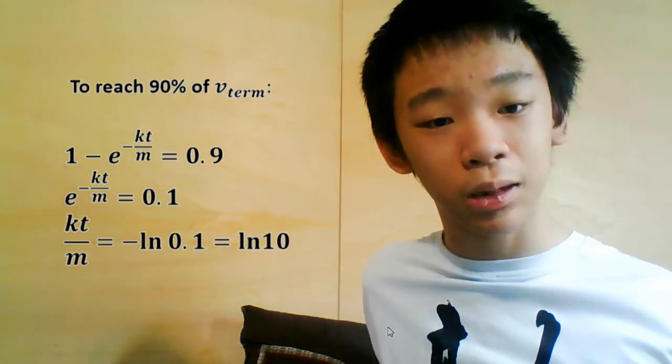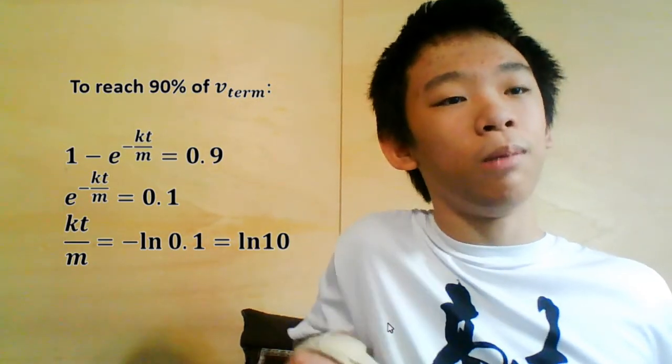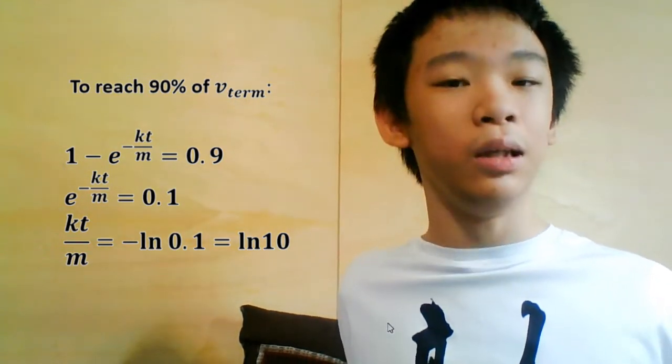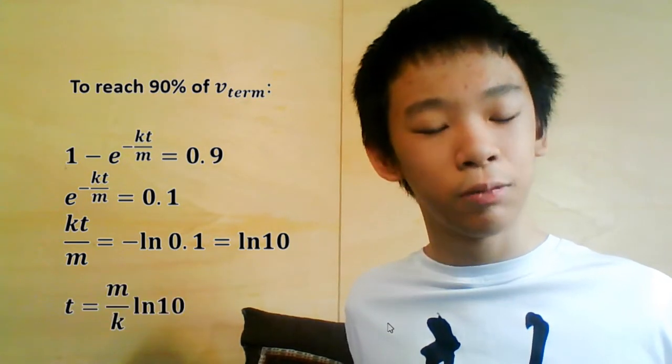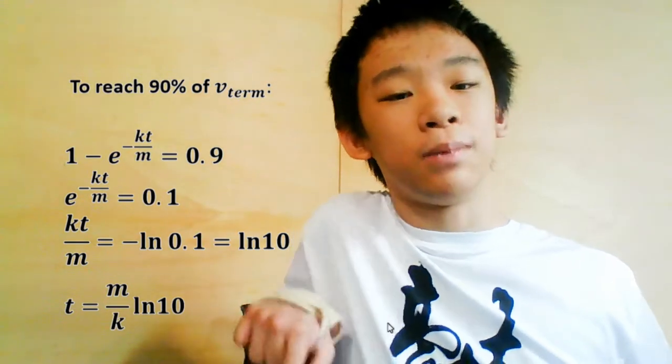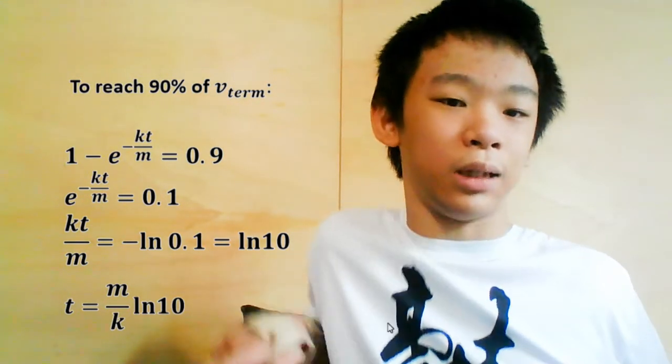To get the time it takes to reach 90% of the terminal velocity, we set v(t) to be 0.9 times the terminal velocity, which is mg over k. So we set 1 minus e to the negative kt over m equal to 0.9, and solve for t. We get e to the negative kt over m equals 0.1, so t equals m over k times the natural log of 10 seconds.